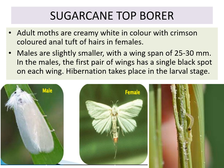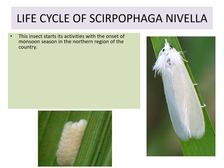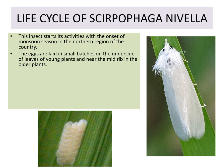Hibernation takes place in the larval stage. This insect starts its activity with the onset of the monsoon season in the northern region of the country. The eggs are laid in small batches on the underside of leaves of young plants and near the midrib in older plants.